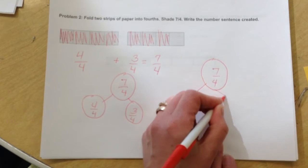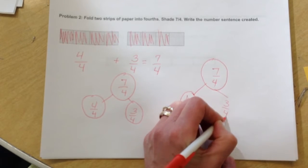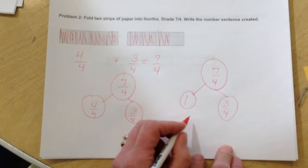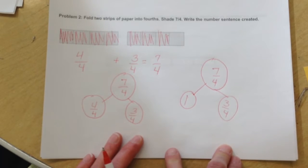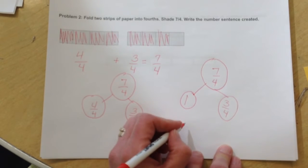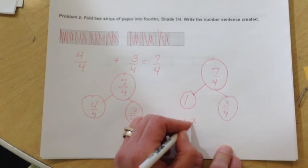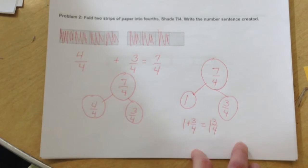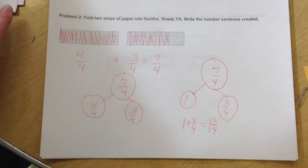That leaves us with three-fourths. So seven-fourths is the same as one and three-fourths. Because here one plus three-fourths equals one and three-fourths.